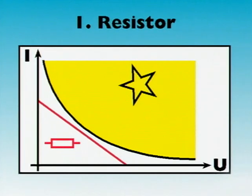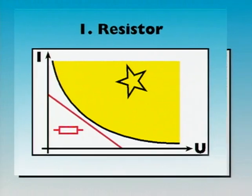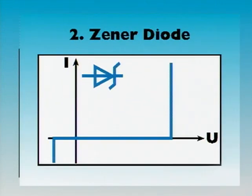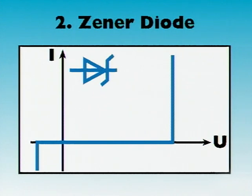Firstly, a resistor limits the current, also in the case of dangerous short circuits. And secondly, a zener diode limits the voltage in case of a fault. In measurement and control circuits, this is typically less than 30 volts.